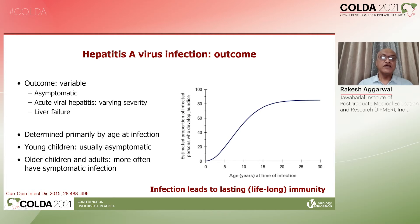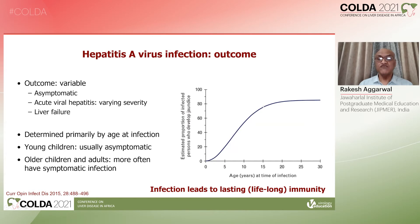The outcome is determined by several factors, of which age at the time of infection is the most important. As we see in the graph on the right, when infection occurs in the first decade of life, only a small proportion of those infected have symptomatic disease or develop jaundice. But as age increases, by adolescence, nearly 80% of those infected develop icteric disease.